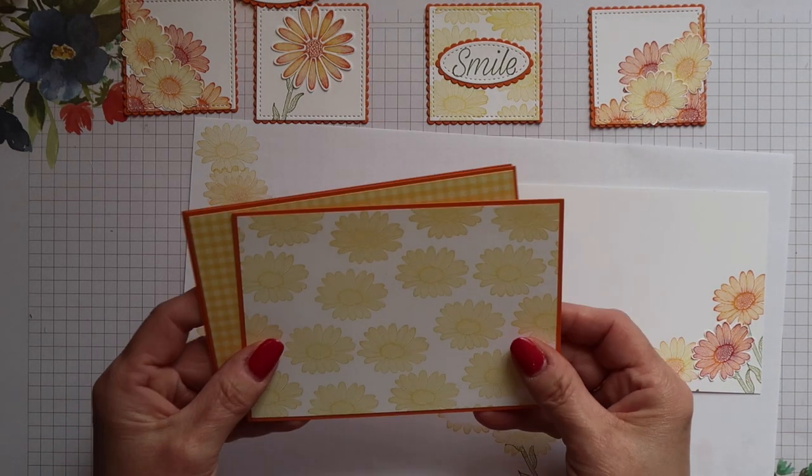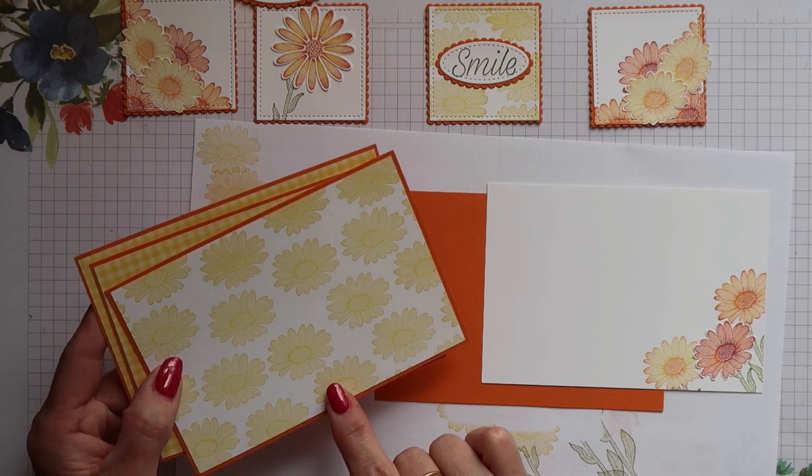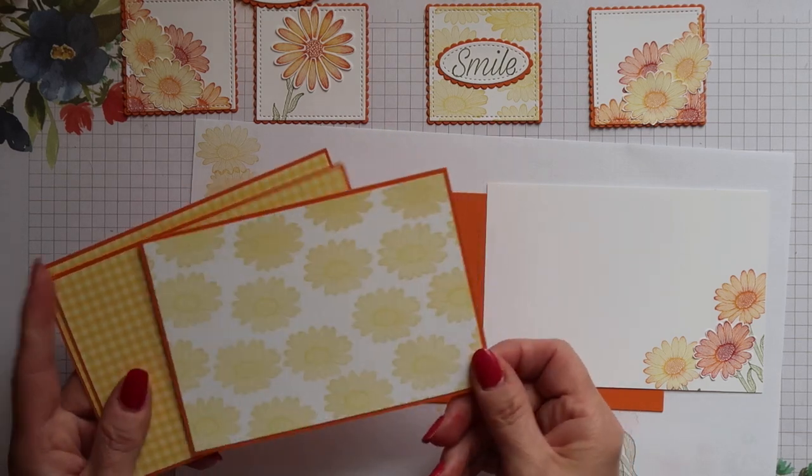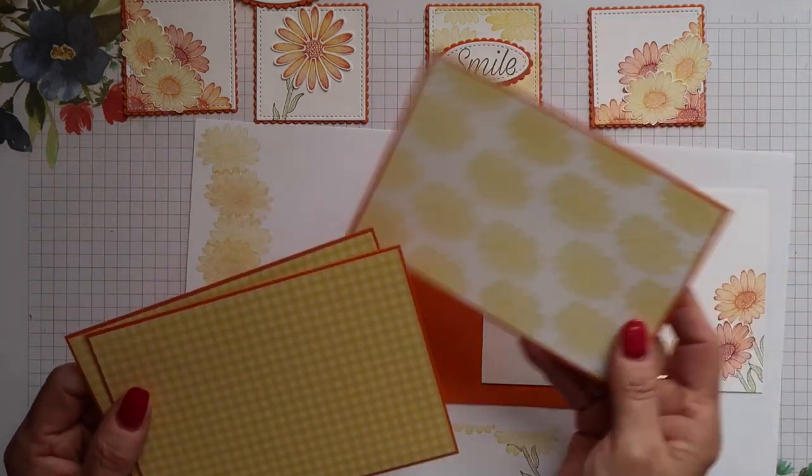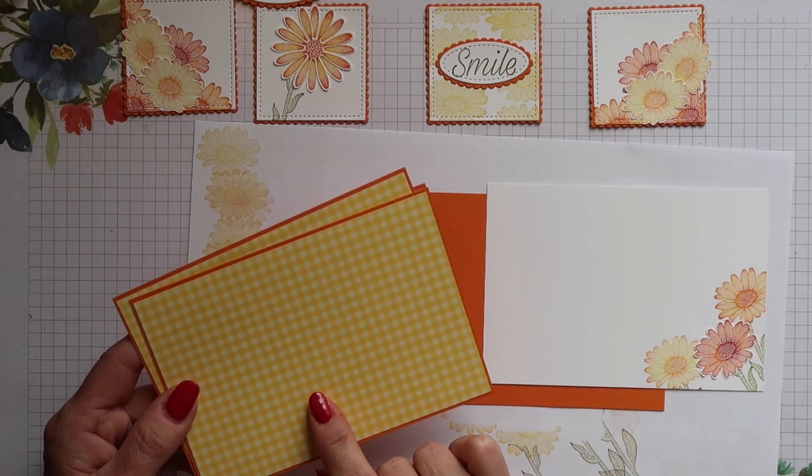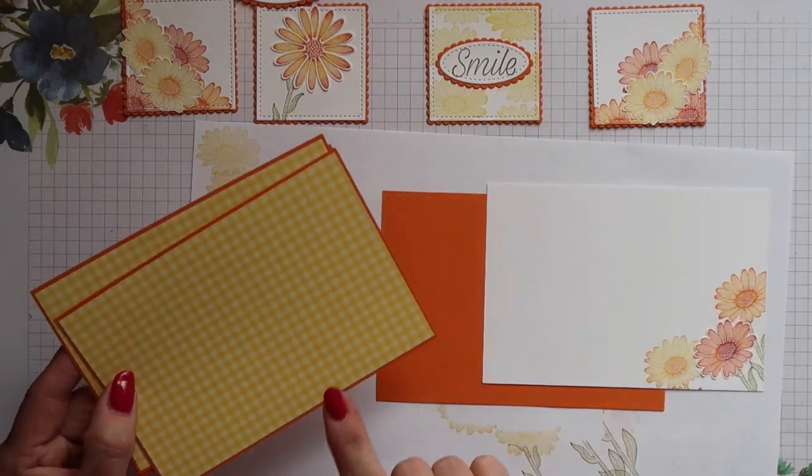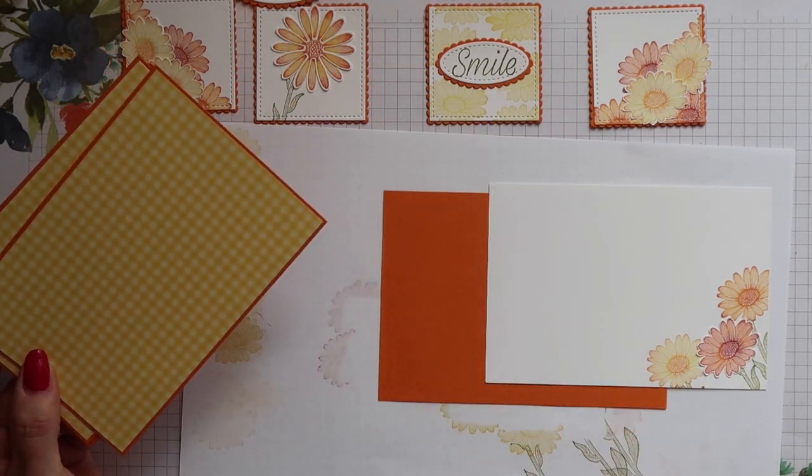The front panel and both inside panels also have the same measurements. I've gone ahead and stamped the front panel as I did that small panel for the inside. The paper is from our new 6 inch brights stack, it's in Daffodil Delight.